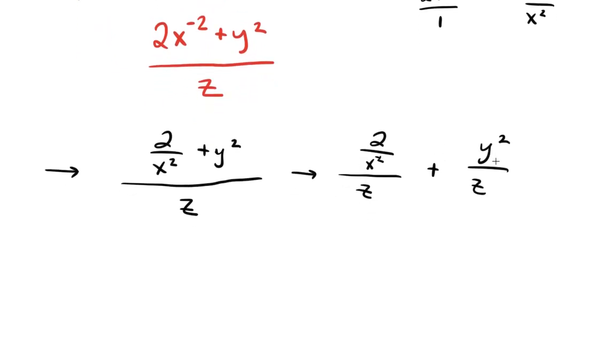And this term over here is fine. It's just a regular looking fraction, but this one isn't. If you have 2 divided by x squared divided by z, that's the same as multiplying those two things together. So 2 divided by x squared z plus y squared divided by z, and this is a fine answer in terms of simplification.